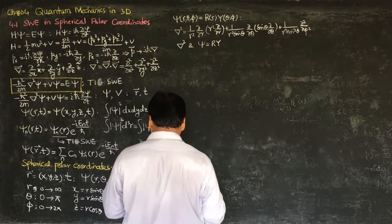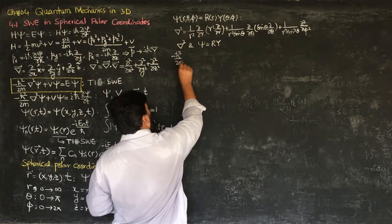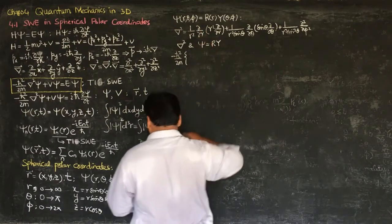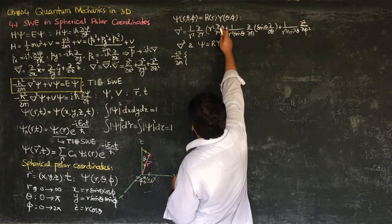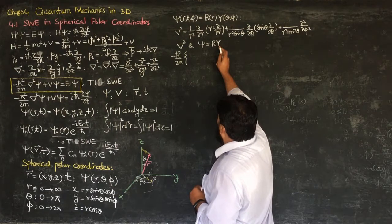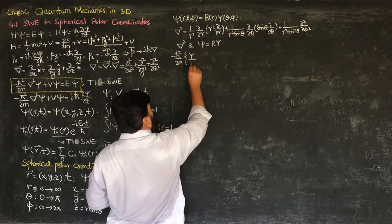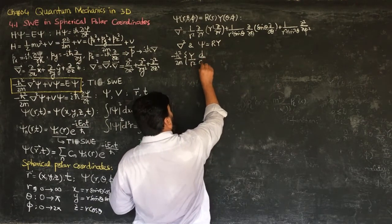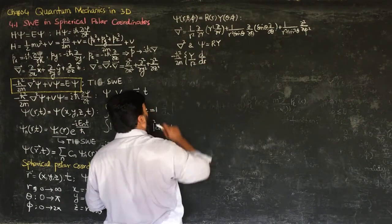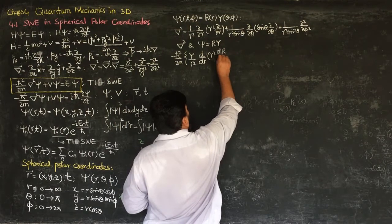Putting these values into the Schrödinger equation, we will have minus ℏ² over 2m as a common factor. For del-squared I write 1 over r² times curly by curly r, and for psi I substitute R times Y. Since Y does not depend on r, it comes out, giving Y over r². The partial derivative becomes d/dr because the wave function is now purely dependent on r.